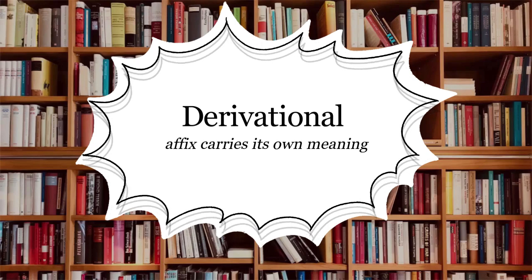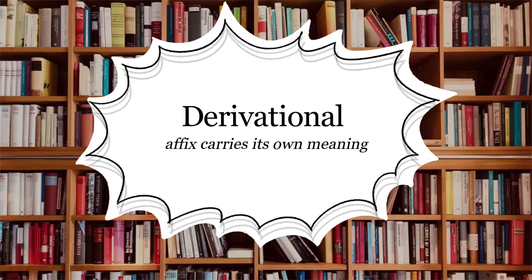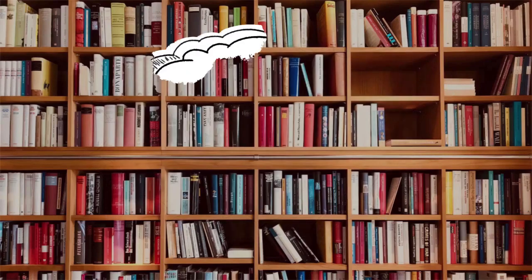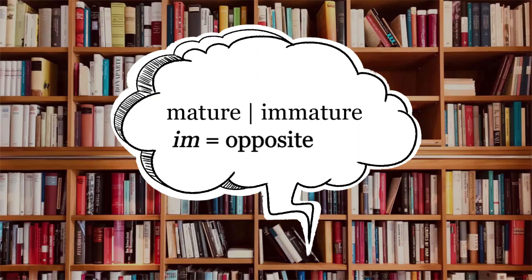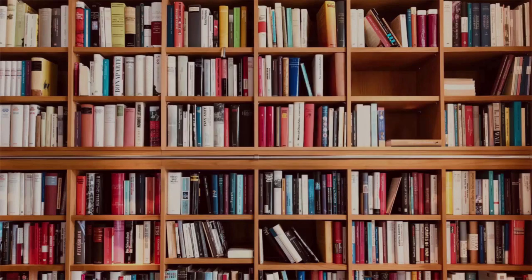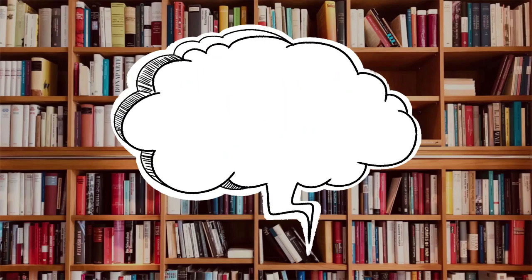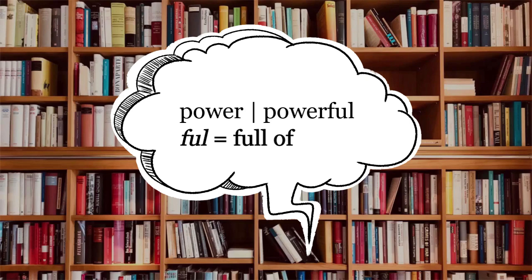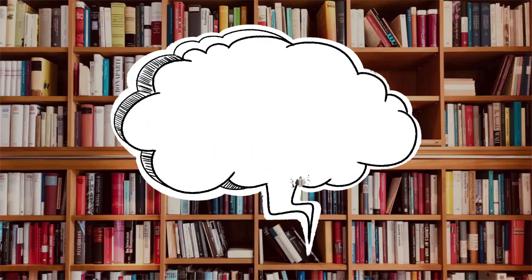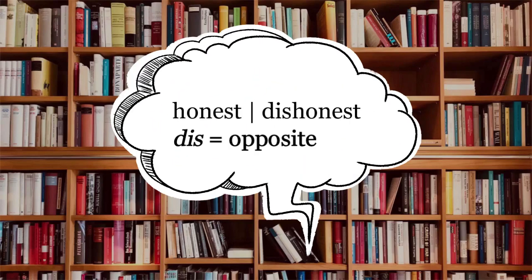It is also called derivational when the affix that you add to a word carries its own meaning. For example: mature to immature — 'im' means opposite. Play to replay — 're' means again. Power to powerful — 'ful' means full of. Honest to dishonest — 'dis' means opposite.